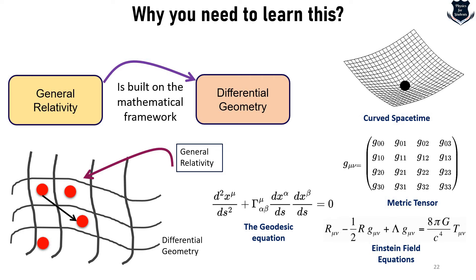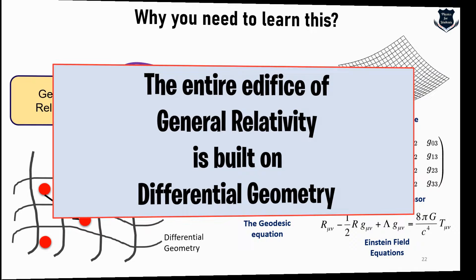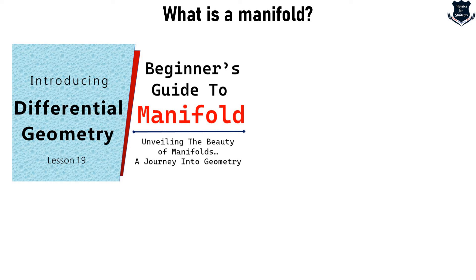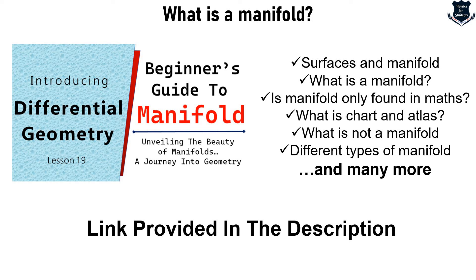A curved space-time and its basic measurement of causal structure is what the metric tensor and the Einstein field equation provide. How we measure those lines involves the geodesic equation. The entire edifice of general relativity is built on differential geometry. I have already made a detailed beginner's guide to manifolds covering surfaces, what a manifold is, whether manifolds are only found in mathematics, and different types of manifolds. Step number four — the link is in the description.